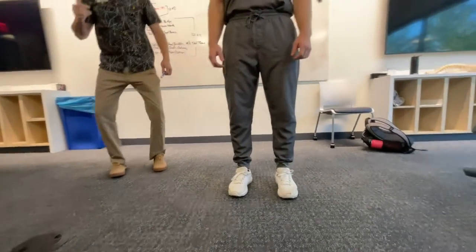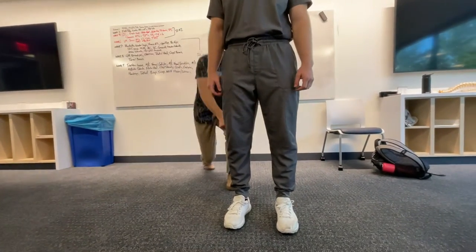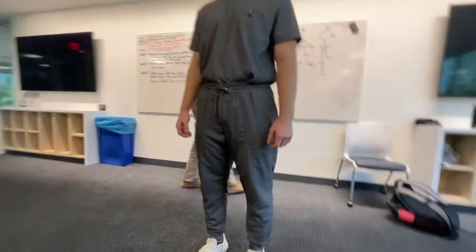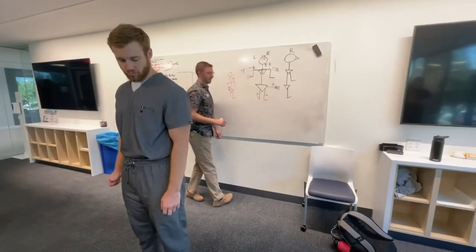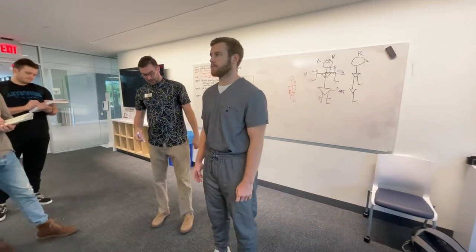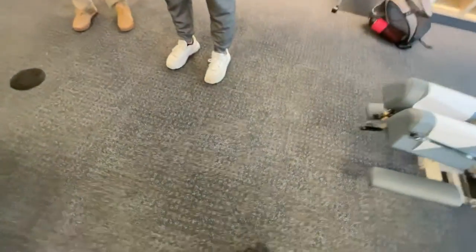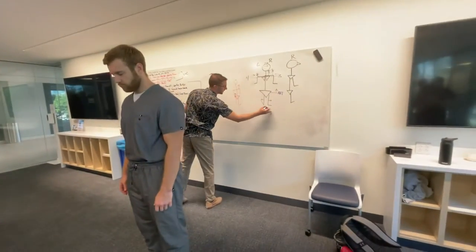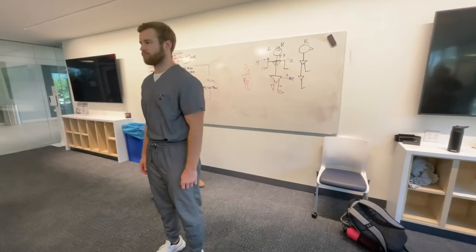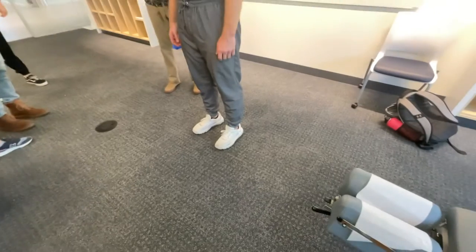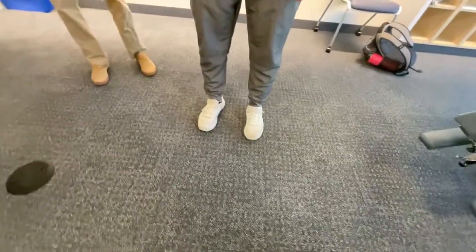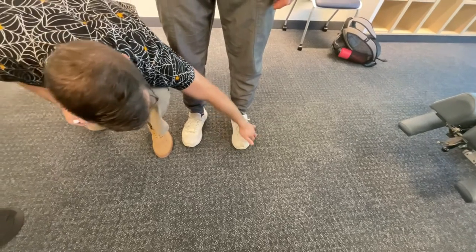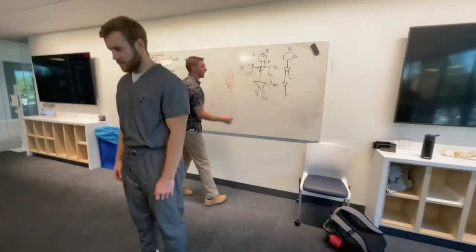Varus is this, valgus would be that. Slight varus — okay, we'll note that. If there were none, we'd draw a dotted line meaning we measured it but nothing showed up. Are his toes facing forward? His right foot is turned out a little bit, so we'll draw a small arrow. If you were to guess, is he standing on the inside or outside of his right foot? Outside. And his left? Probably outside too.